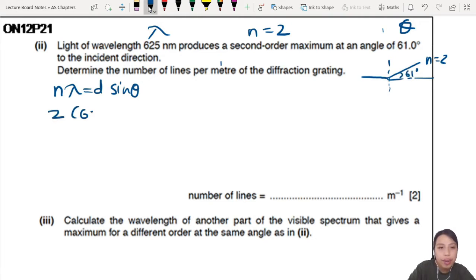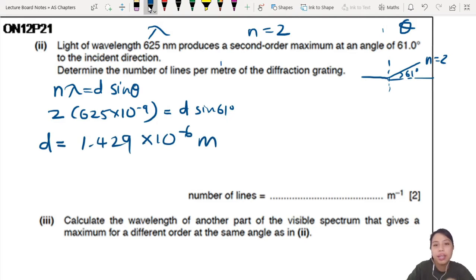So second-order, wavelength 625 nanometers equals to D. I don't know what's the D, so put that D. Sine 61. So if you calculate everything, you should get a D value of 1.429 times 10^-6 meter. But they want lines per meter. See, this is meter^-1, this is just meter.